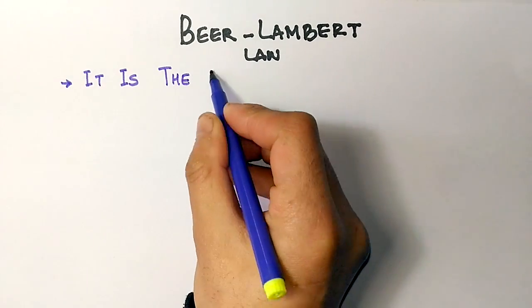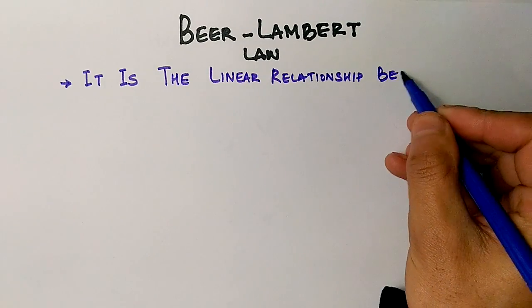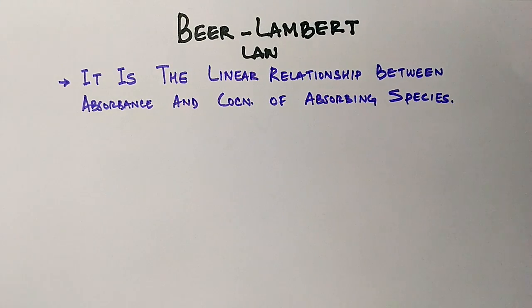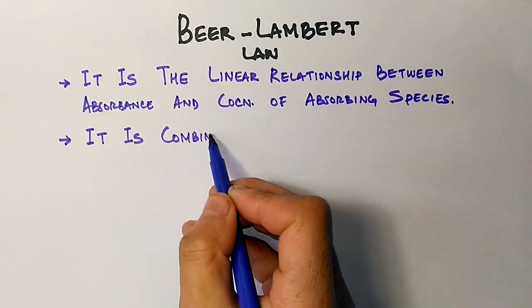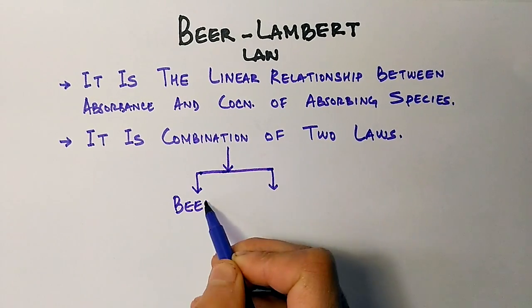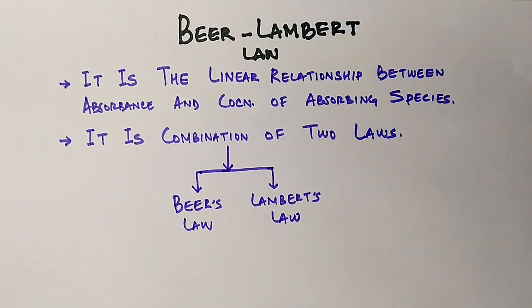Here you can see the statement of Beer-Lambert's law is the linear relationship between absorbance and concentration of absorbing species. The thing is that it's the combination of two laws: Beer's law plus Lambert's law gives us the Beer-Lambert law.